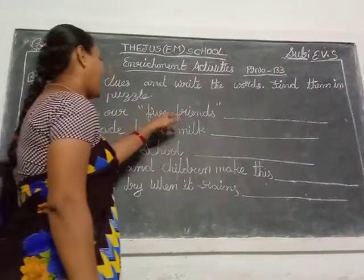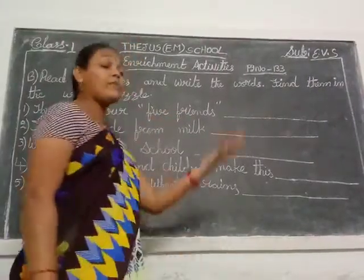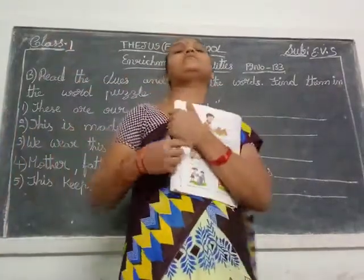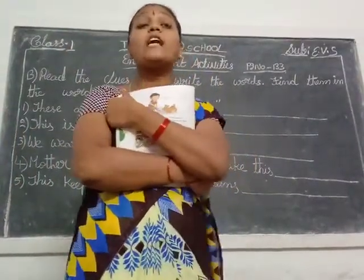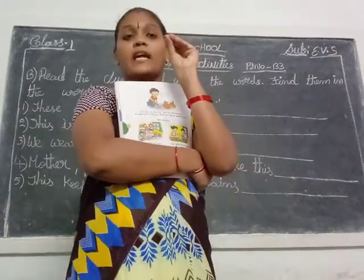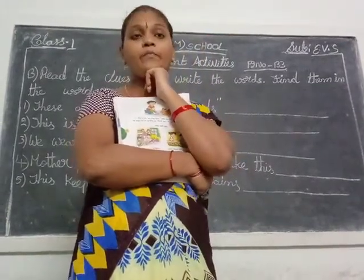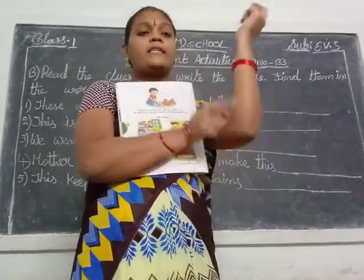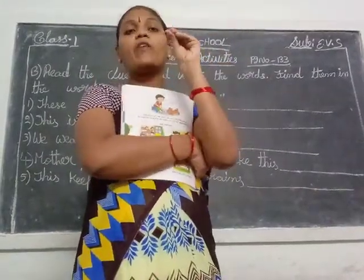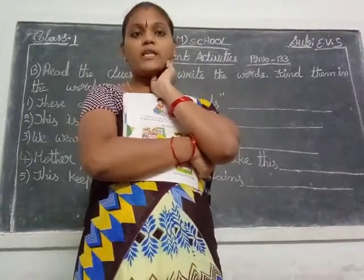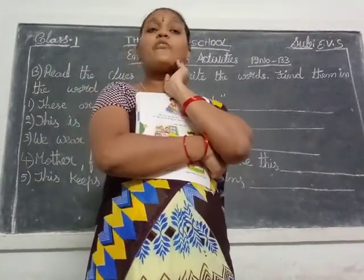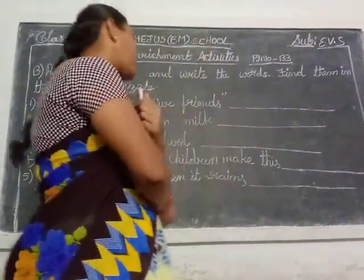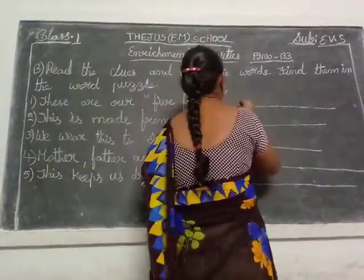These are our five friends in our body — five friends are there. What are they, children? Always play — sense organs! Five sense organs are there. What are those sense organs? Eyes, nose, tongue and skin. These five are our sense organs, our five friends. Write in this blank: sense organs.